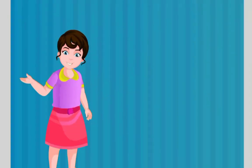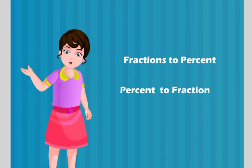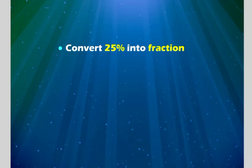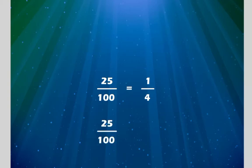Children, just as we can convert fractions to percent, we can do vice versa and convert percent to fractions by dividing with hundred. Hence, if we have to convert 25 percent to fraction, divide 25 by hundred. So, we get 1 by 4 as the answer. In the same example, if we do not simplify the fraction further, we can also represent it as a decimal 0.25.